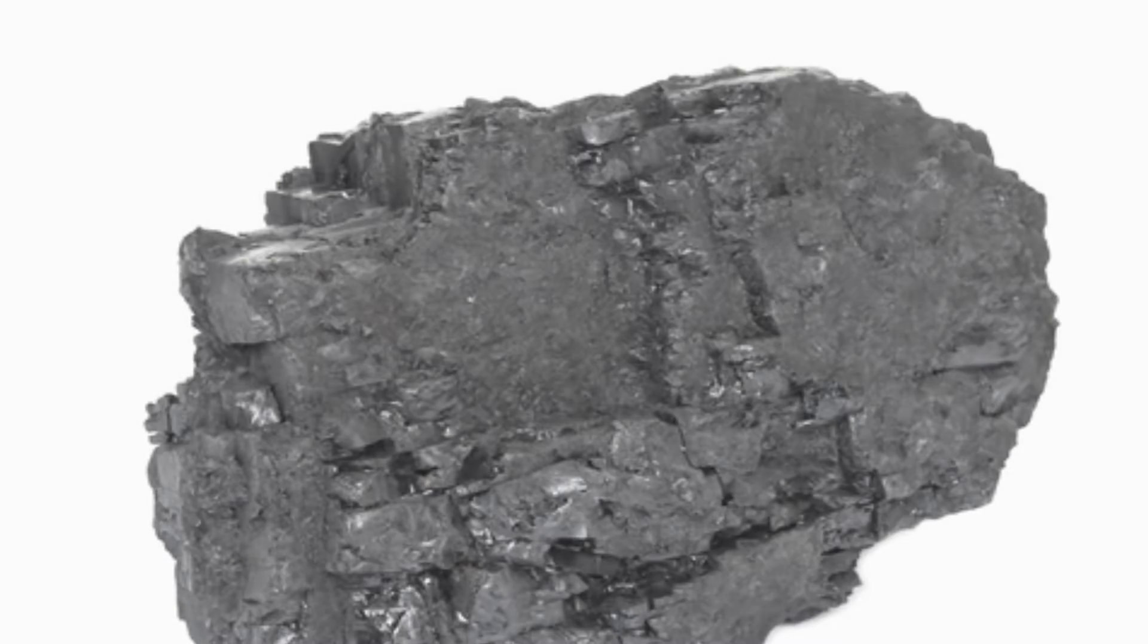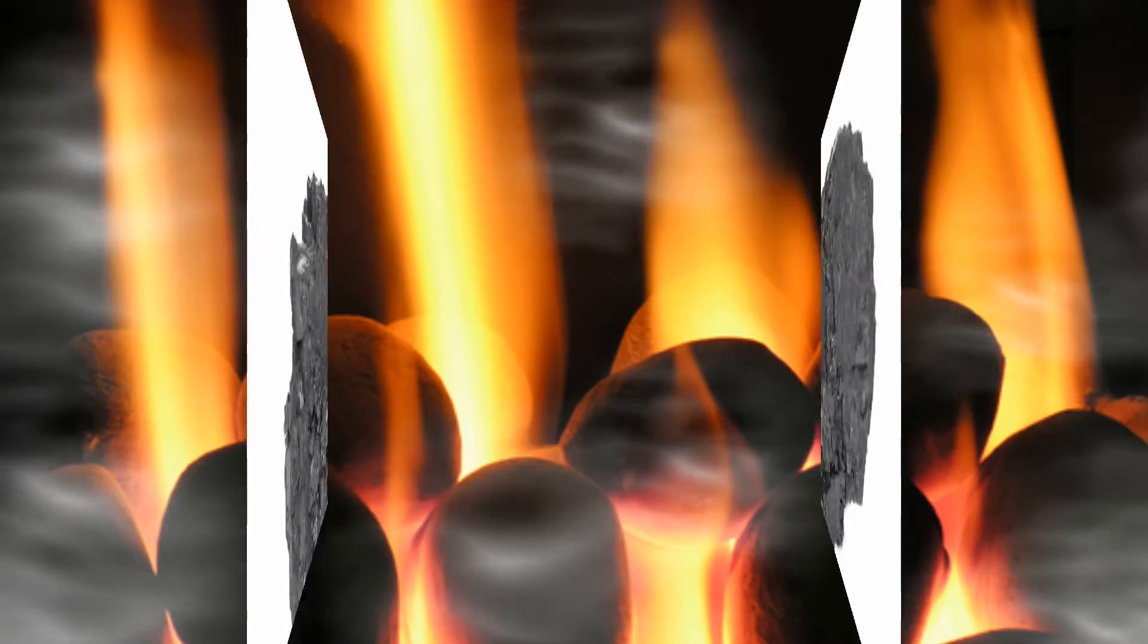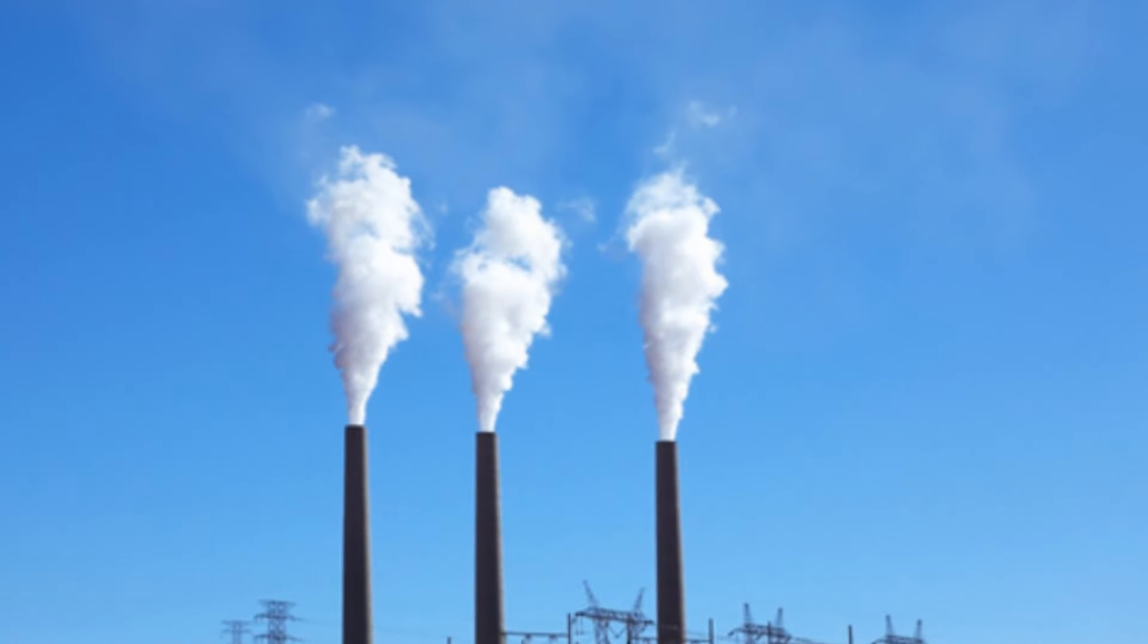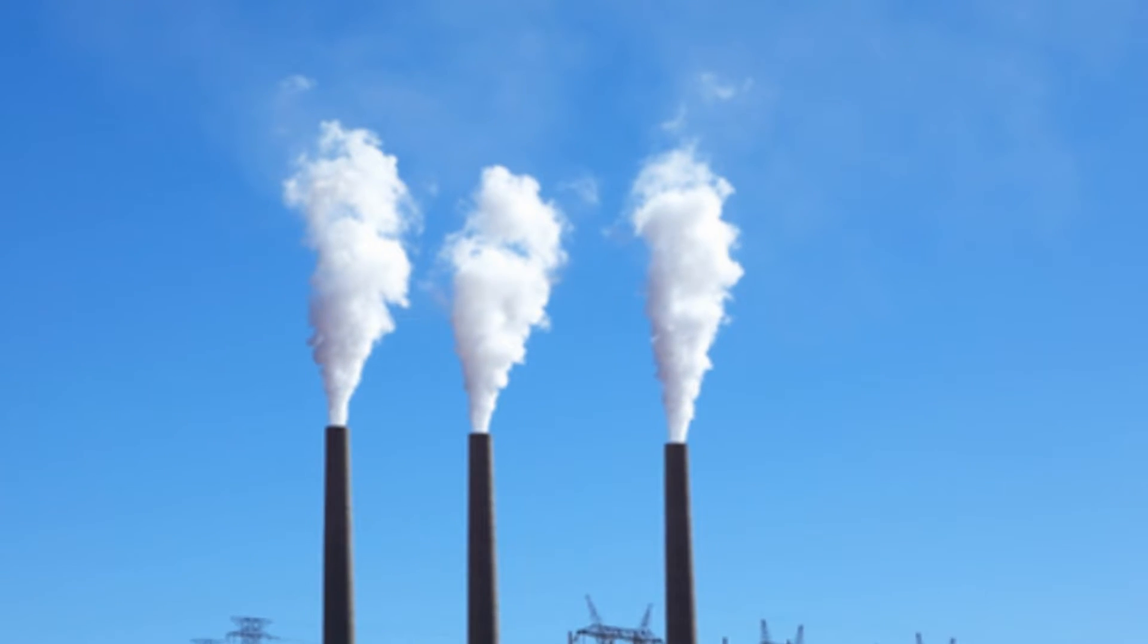Mercury is found in many rocks, including coal. When coal is burned, mercury is released into the environment. Coal-burning power plants are the largest human-caused source of mercury emissions to the air in the United States.